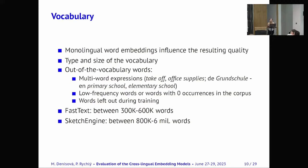And the first parameter was vocabulary. So monolingual word embeddings influence the resulting quality and of course the type and size of the vocabulary. So we should use only words for our evaluation dataset that are included in the monolingual word embeddings. And we should avoid out of vocabulary words such as multi word expressions. Since cross-lingual models do not handle these so far such as takeoff or office supplies or also words that need more than one word to be translated in the target language such as German word grundschule which is translated as primary school or elementary school in English. And also we should avoid low frequency words or words with zero occurrences that are not in the monolingual word embeddings.